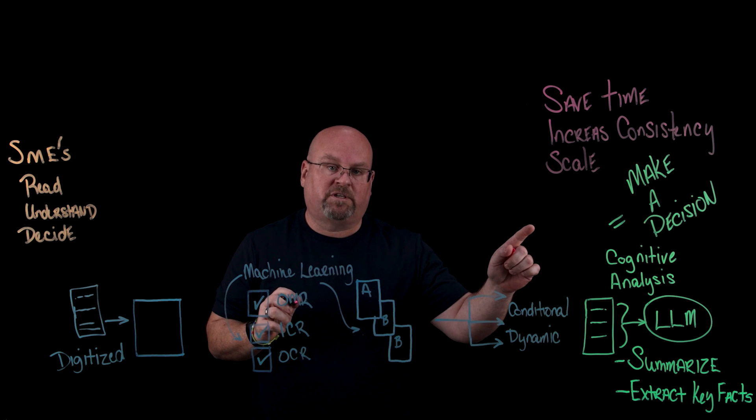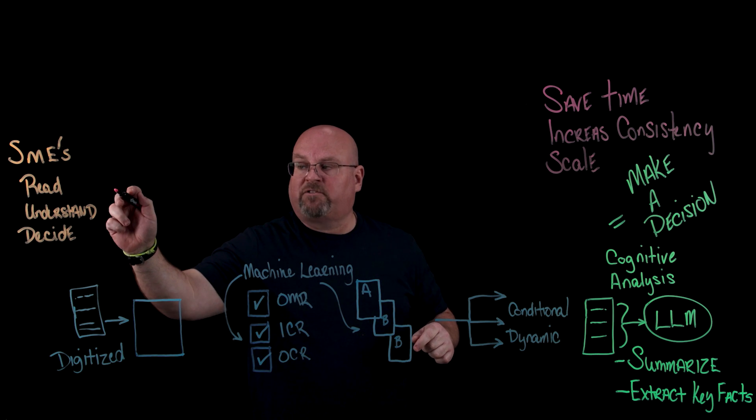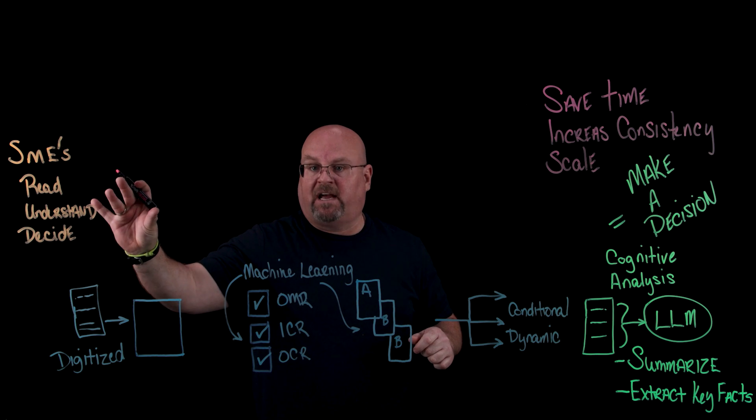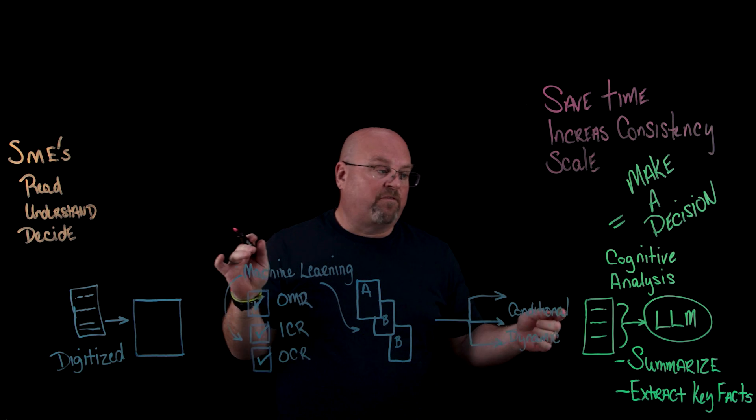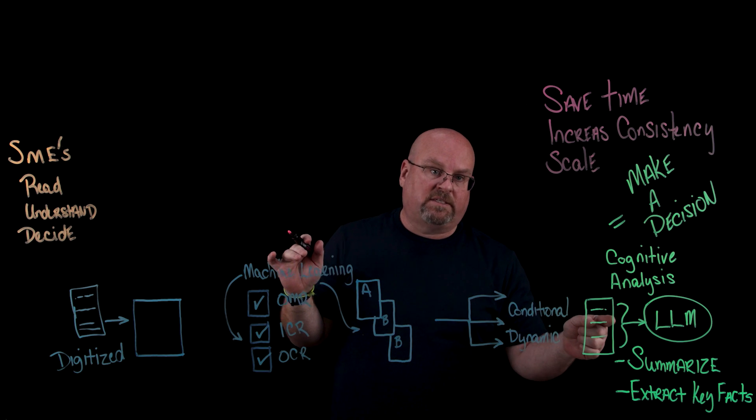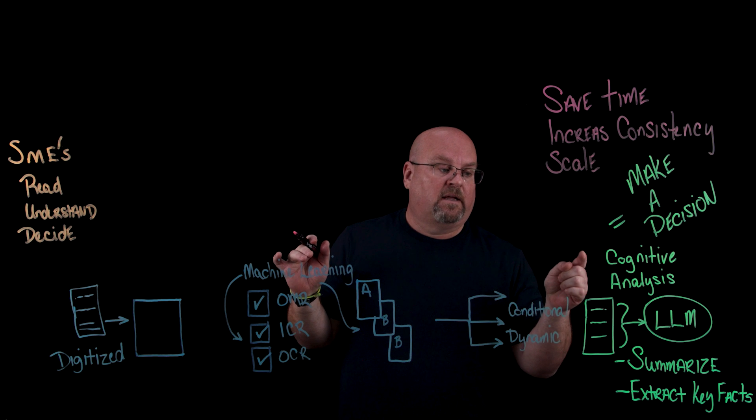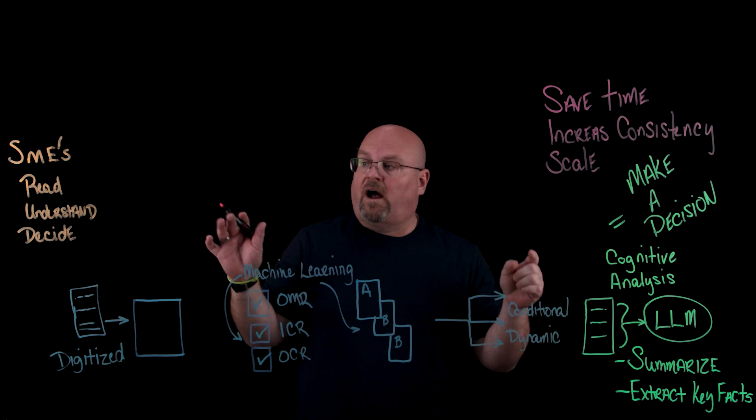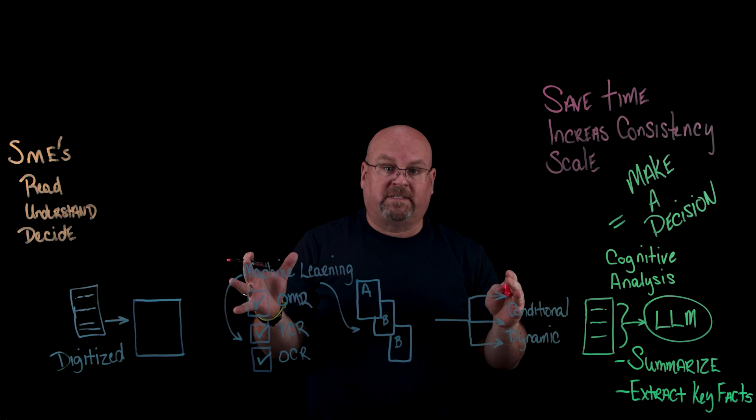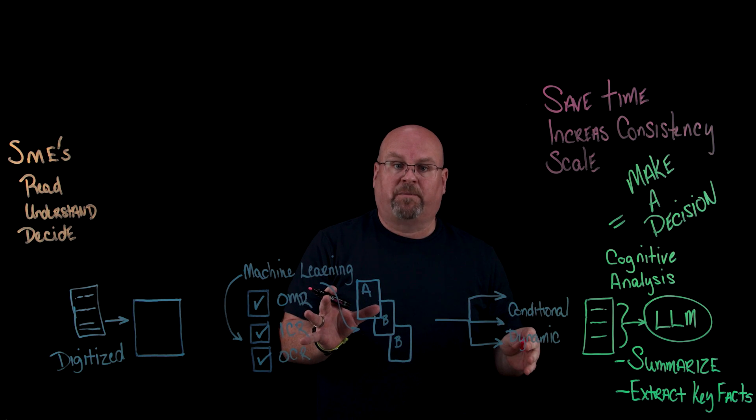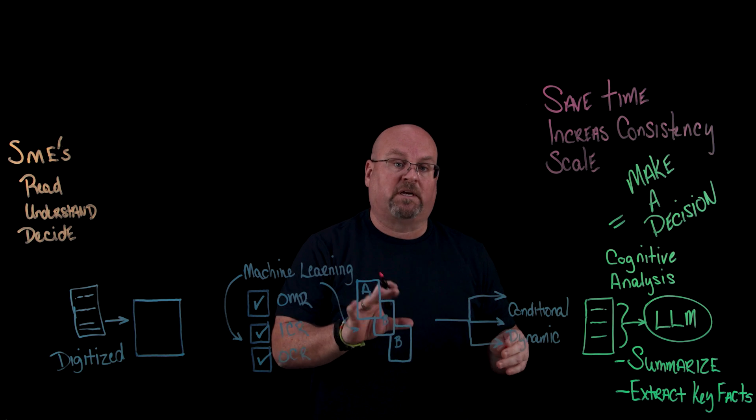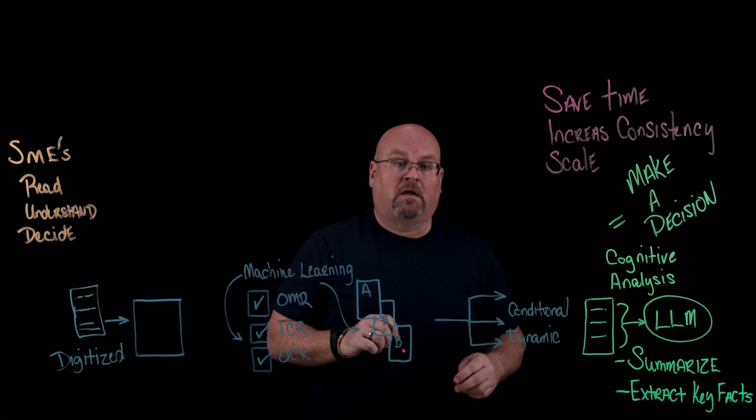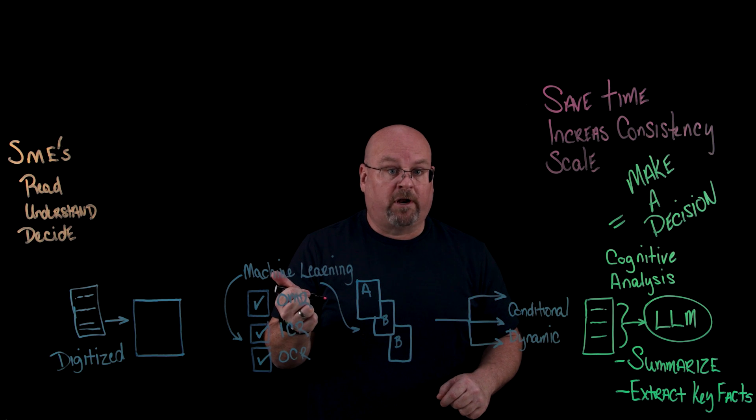The quicker I can get to a decision, the less I have to rely on a human to actually put facts together with context. If I can provide them context using generative AI and other AI techniques and technologies, I'm able to shorten the time it takes for any document process, especially complex document processes, which results in more time saved, which is greater efficiency, less cost.